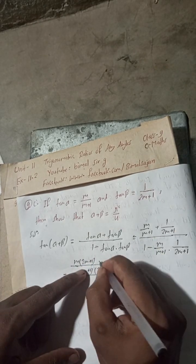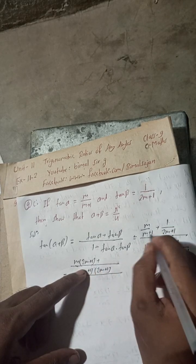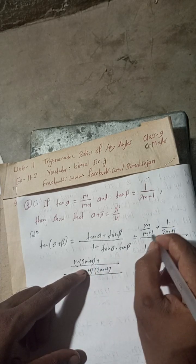Multiplying 1 by m+1 is m+1 only. Here again (m+1) × (2m+1).